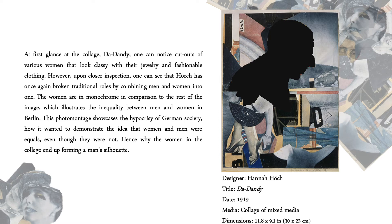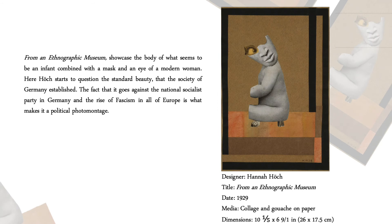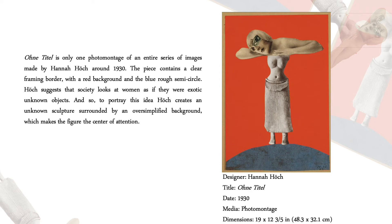You're also able to see the hypocrisy of German society — how it wanted to demonstrate that women and men were equals, even though they were not. That is why Hannah created a silhouette of a man at the end. It's also interesting how she played with the title, naming it "Dandy" — combining Dada and the word dandy, which is a man who cares a lot about his appearance. "Dada Ernst" from 1920 also addresses the inequalities women had in Germany. This particular piece, created in 1929, showcases the body of what seems to be an infant combined with a mask and the eye of a modern woman. Here, Hannah questions the standard of beauty that German society established, making it a political photomontage. Hannah suggests that society looks at women as if they were exotic, unknown objects, questioning the position of the new woman as a fragmented, constructed image that serves a particular end in society, suppressing other possible individual choices and desires.